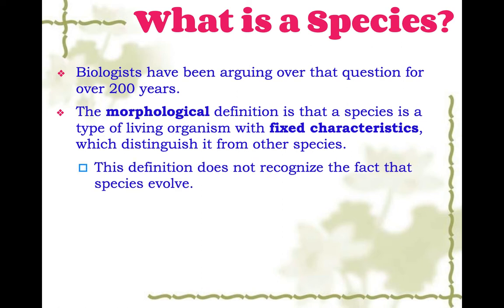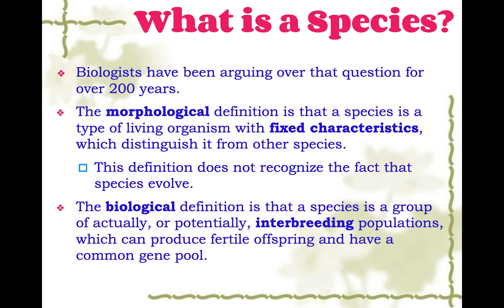But that definition doesn't recognize the fact that species can evolve — it says they have fixed characteristics. So there's that problem with that one. Then there's the biological definition, which is that a species is a group of actually or potentially interbreeding populations which can produce fertile offspring and have a common gene pool.